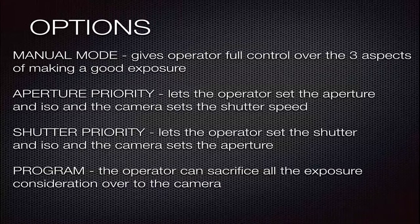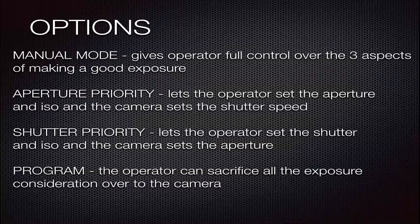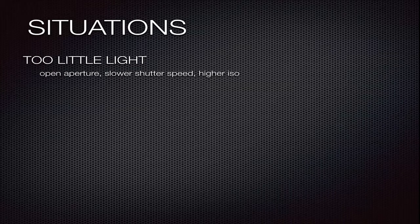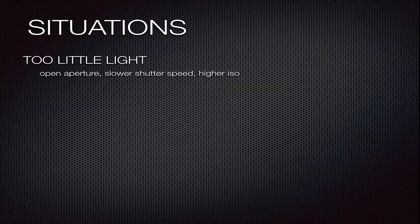Set the aperture to your desired value and see what shutter speed it yields. If it yields too slow a shutter speed, then you know you have to increase shutter speed, which is going to affect your aperture. And as a last resort, you may be forced to raise your ISO. If you have too little light, you can open the aperture, slow the shutter speed, or use a higher ISO. They all have consequences: opening the aperture narrows depth of field, slowing the shutter speed adds motion blur, and a higher ISO generates more noise.